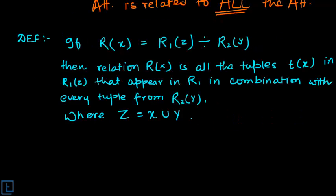What is division operator? Here as you can see, Rx we are considering as the resulting tuple and R1 Z is something which we are dividing by R2 Y. So the definition is that the resulting Rx result is the tuples Tx in R1 Z that appears in R1.